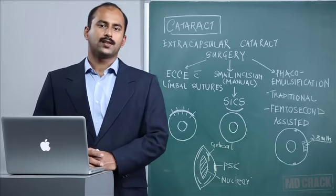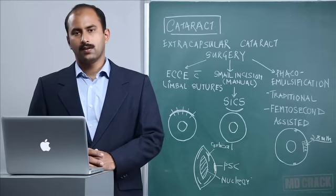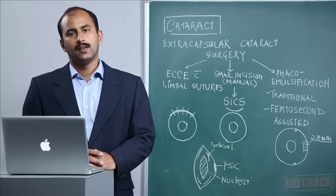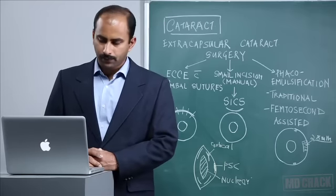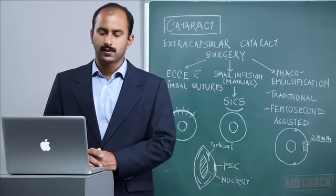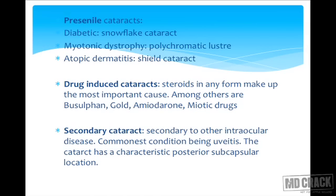Certain drugs can produce cataracts at an early age. The most common among them are steroids. Steroids in any form or any route are most notorious to cause lenticular opacities and cataracts before their age. Among others there are busulfan, gold, amiodarone, and miotic drugs which are used for treatment of glaucoma.